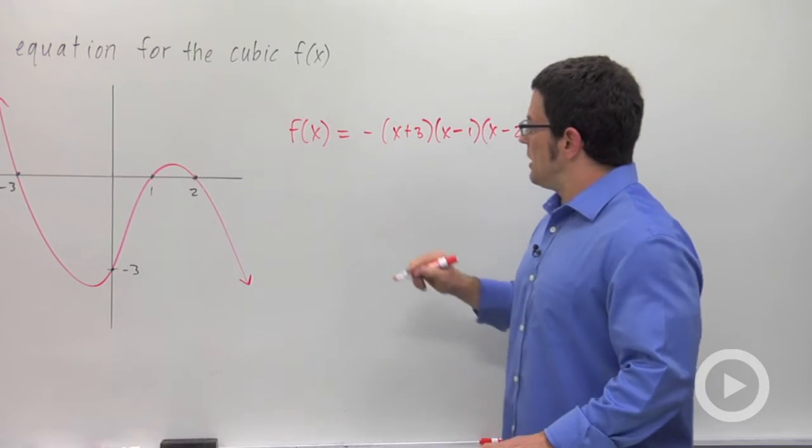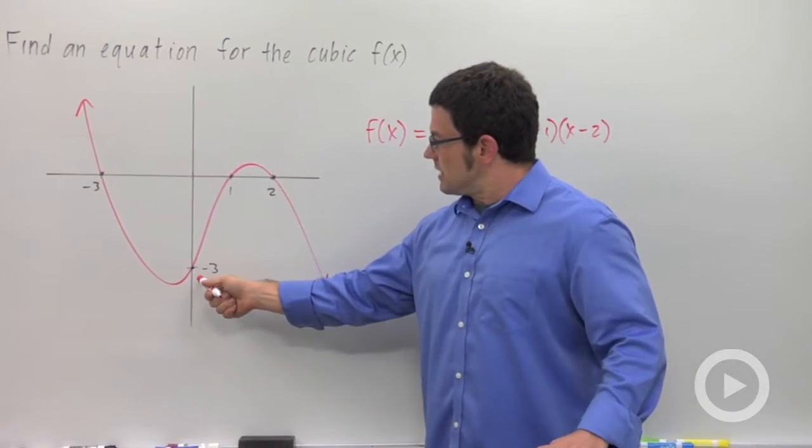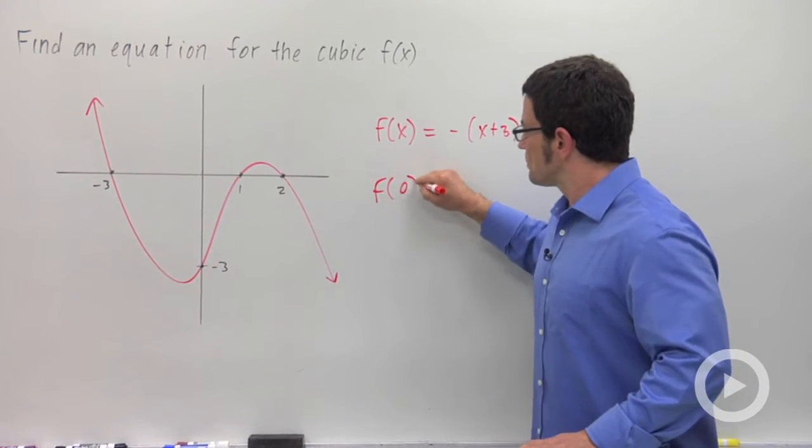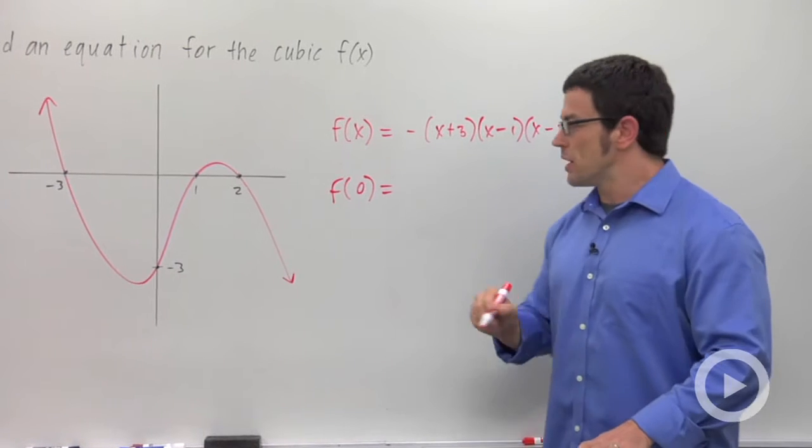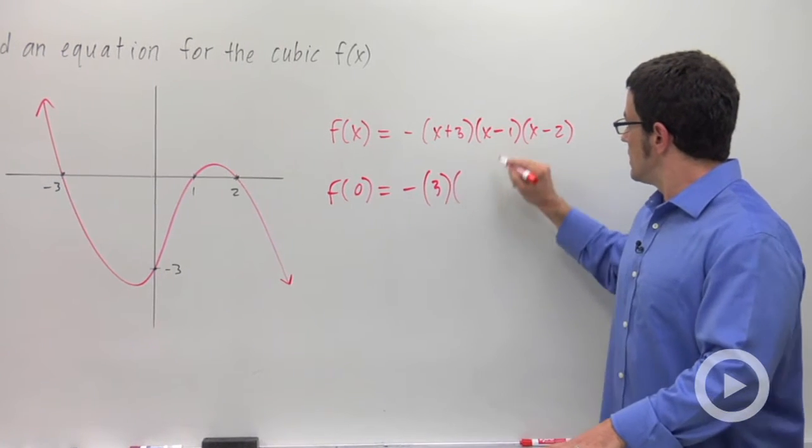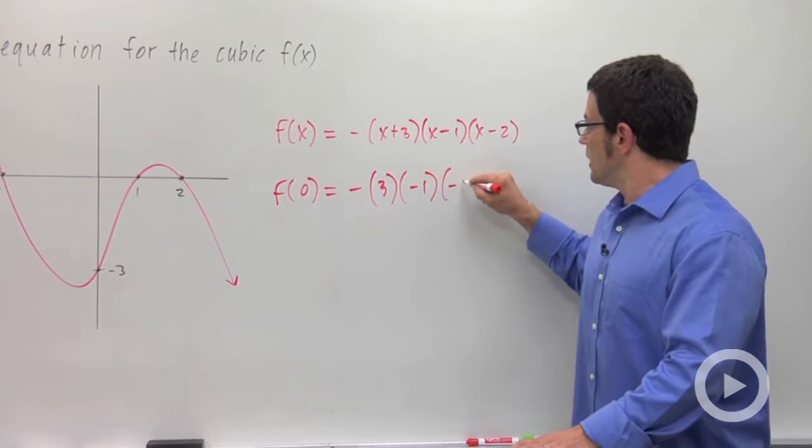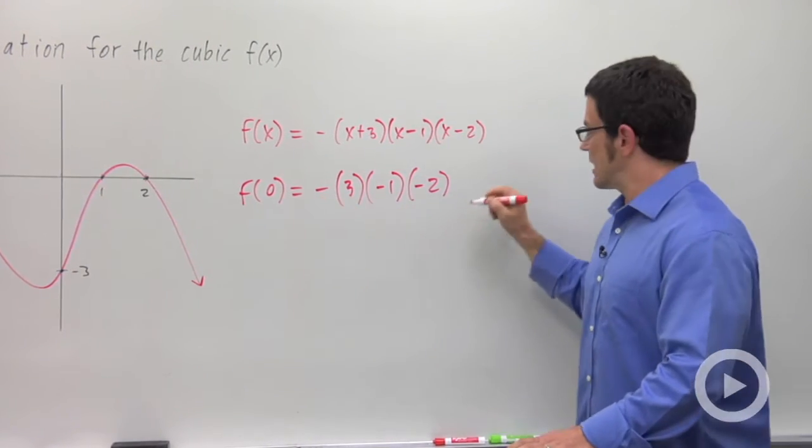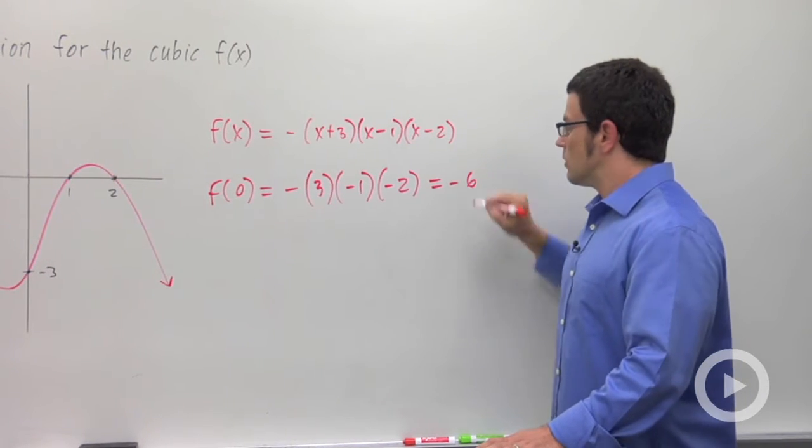So let's see how we did here. We can test it by seeing if it passes through negative 3 when we plug in 0. So f of 0 equals negative 3, negative 1, negative 2. So this is 2 times 3, negative 6. OK, it didn't work.